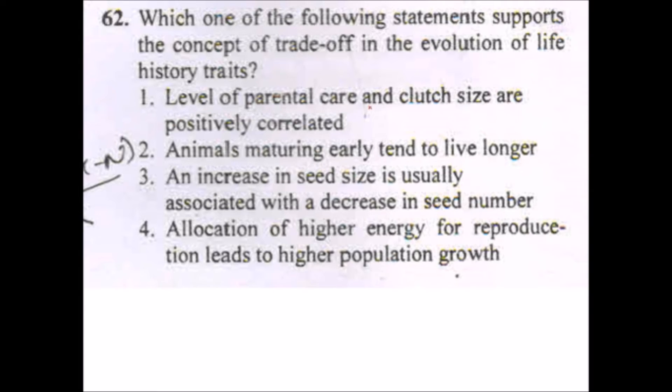So the answer will be ecophenes. Next question: which of the following statements support the concept of trade-off in the evolution of life history? Let's have a look over the options. Level of parental care and clutch size are positively related - if the clutch size is more then it is not possible to have more care for each and every individual.